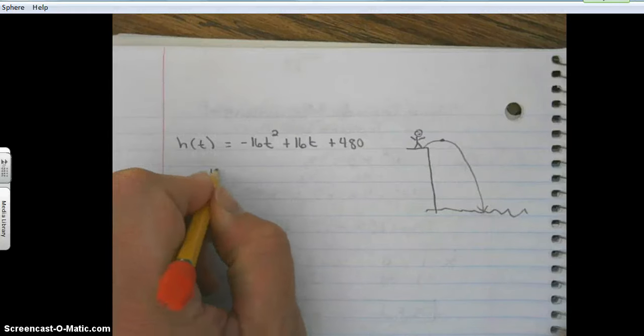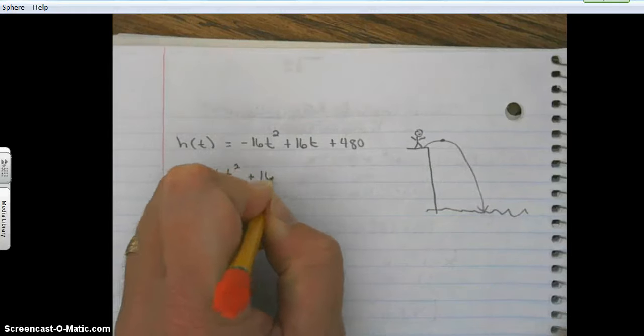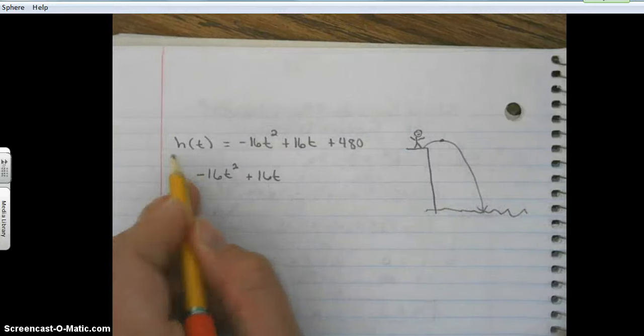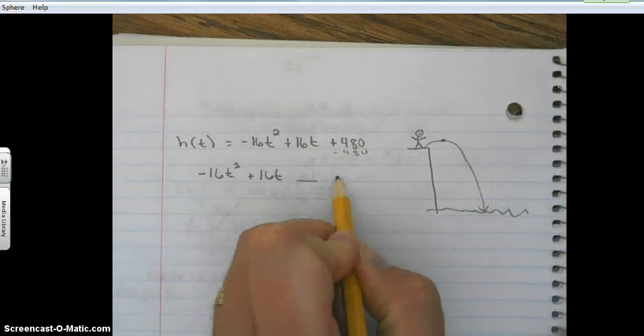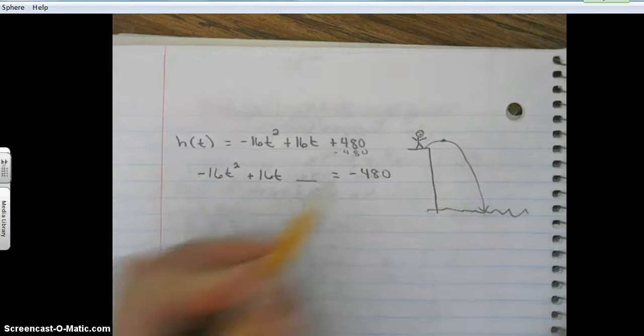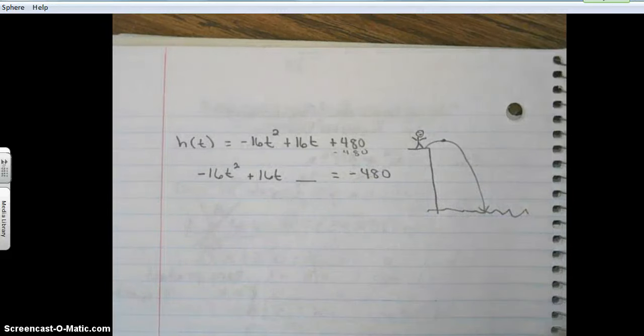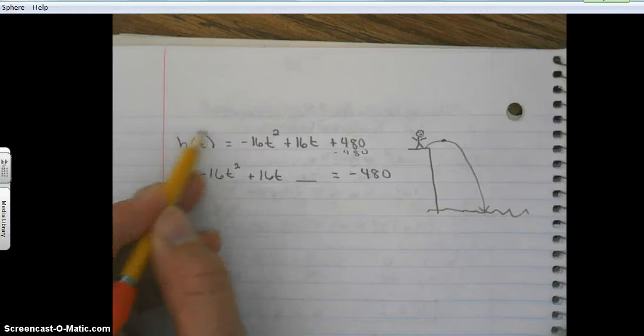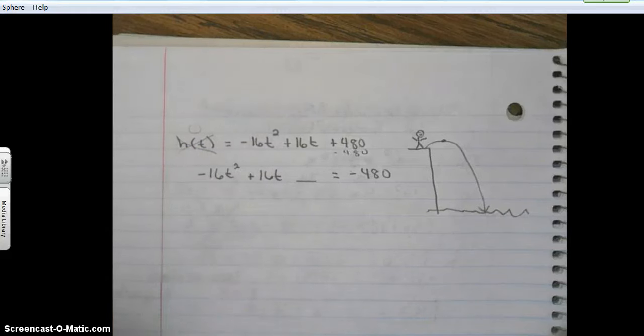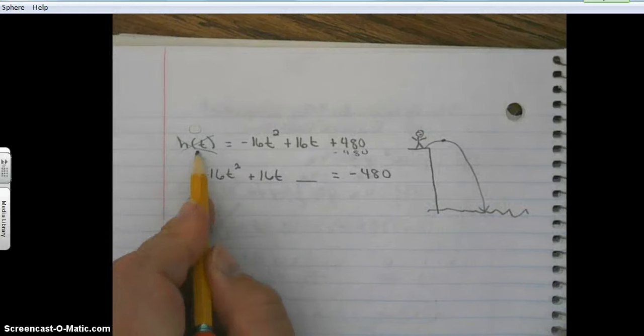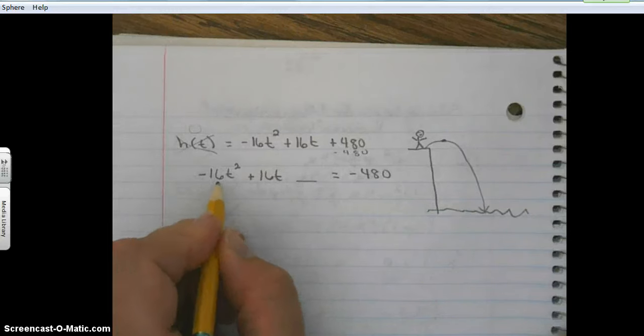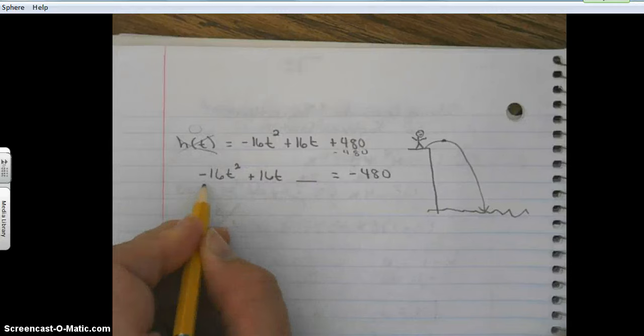Let's start off by rewriting this. Let's move the 480 to the other side of the equal sign, so we're going to subtract the 480. Now we're going to complete the square. The leading coefficient is not one, so we have to factor it out.